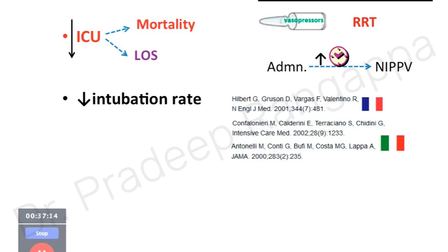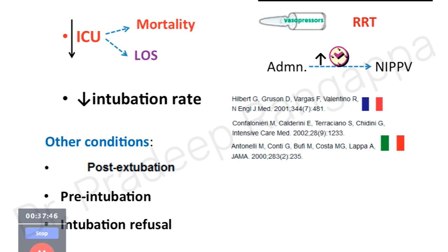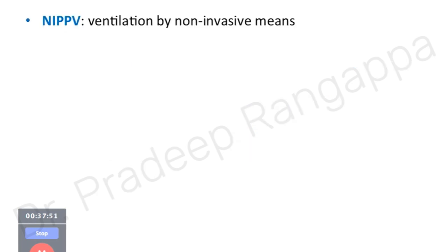Other uses of NIV: post-extubation — after extubating patients with pulmonary edema or CO2 retention, NIV can be applied to prevent re-intubation. Pre-intubation: a trial of NIV to recruit alveoli and pre-oxygenate lungs effectively before intubation. End-of-life patients who do not want intubation can be given a trial of NIV.